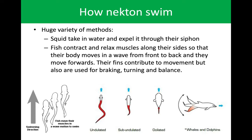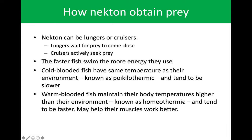So how do these nekton obtain prey? There are basically two strategies. They can either be lungers or cruisers. A lunger is something that waits in the rocks, camouflaged, standing by and waiting for something to come by — a target of opportunity — then lunges at it really quick. A cruiser, on the other hand, is built for speed and will actively swim and seek prey and chase them down. Cruisers have to swim faster, which comes with more energy use.